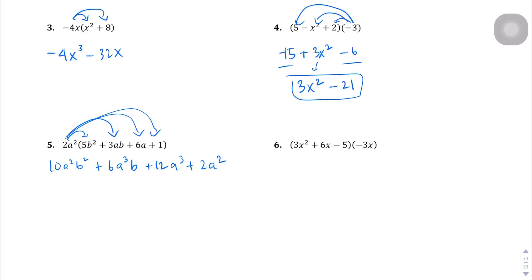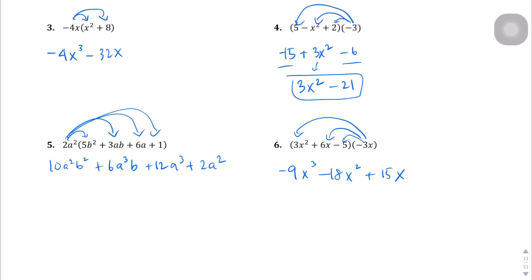Last problem for this video. Negative 3x times 3x squared: negative 3 times 3 is negative 9, and x times x squared gives 3 x's if you add the exponents. Next, negative 3x times 6x: negative 3 times 6 gives negative 18, x times x — 1 plus 1 is 2 — so x squared. And then lastly, negative 5 times negative 3 is going to be 15, and then there's just that one x we're multiplying with, so it's plus x.